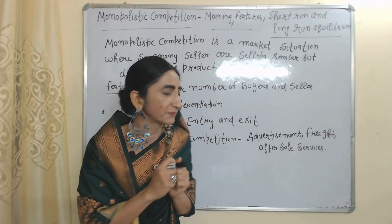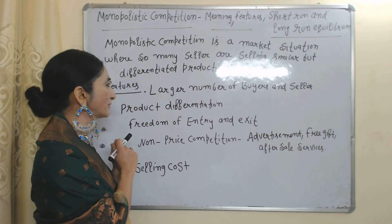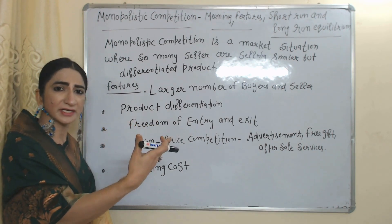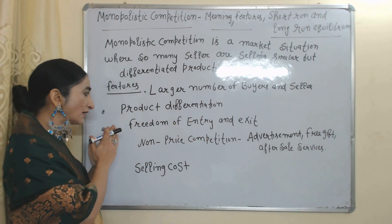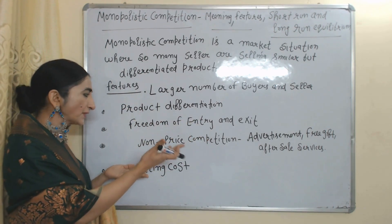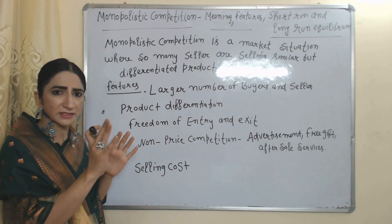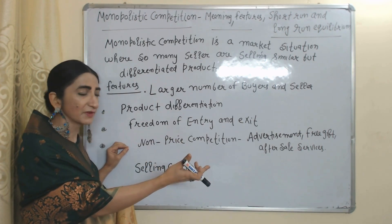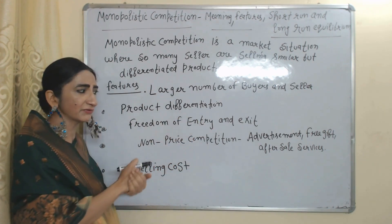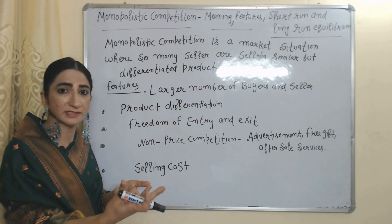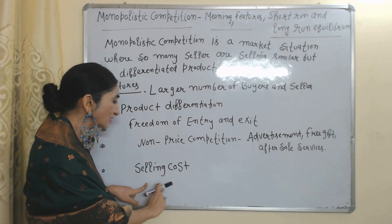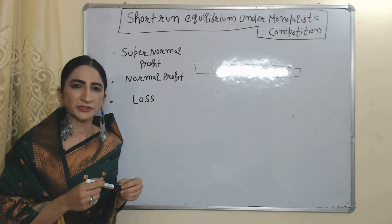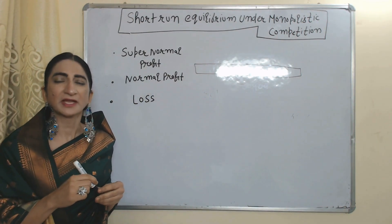The features of monopolistic competition are: there are a large number of buyers and sellers; product differentiation, meaning the quality and features of each seller are different from others; free entry and exit of firms; firms don't compete with each other on the basis of price — that's why it is called non-price competition. Firms compete by giving advertisements, free gifts, and after-sale service, which is why their selling cost and advertisement cost are very high.